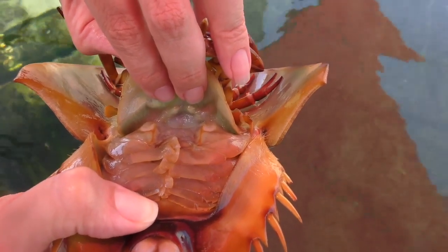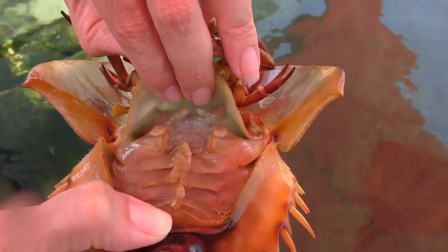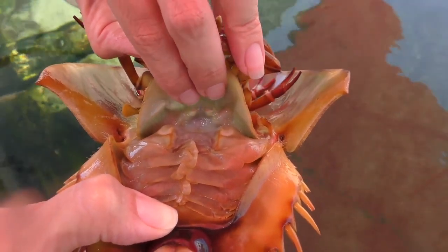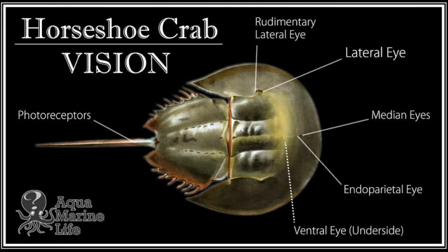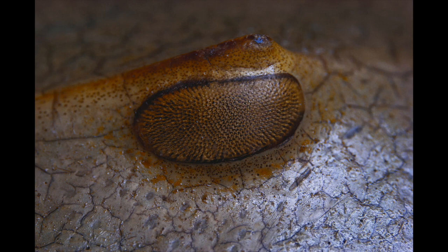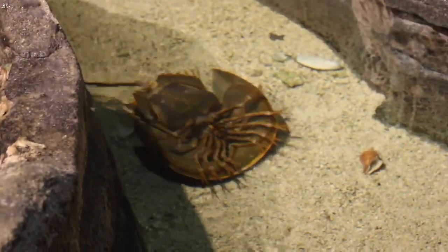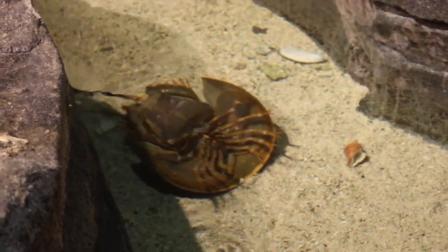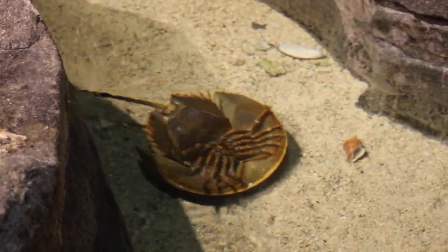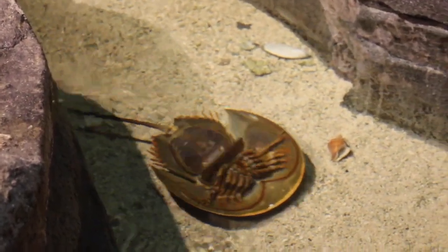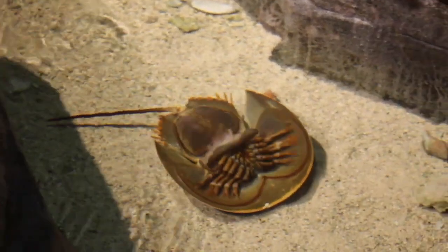Without this adaptation, horseshoe crabs would not be able to survive in their marine habitat. Horseshoe crabs possess 10 eyes that are divided into two types: compound and simple. Their compound eyes, located on the sides of their body, are made up of hundreds of small lenses, each with its own photoreceptor cell. This arrangement allows horseshoe crabs to perceive a wide range of visual information, including movement, changes in light levels, and even polarized light. This ability helps them to navigate and orient themselves in the environment, even in murky or low light conditions.